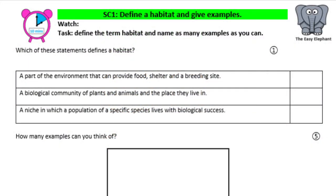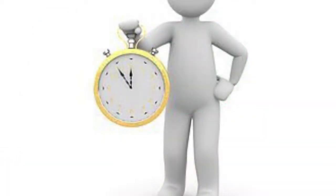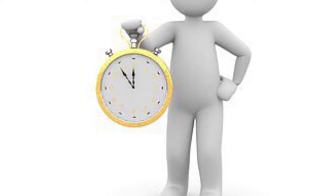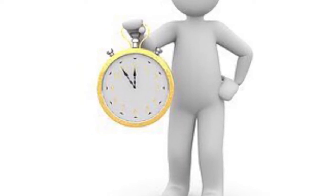Now that we know what a habitat is, we're going to try and think of some examples of habitats. You will have the next minute to think of as many examples as you can. You will need to write these examples onto your post-it note. Okay, your minute starts now. Good luck.